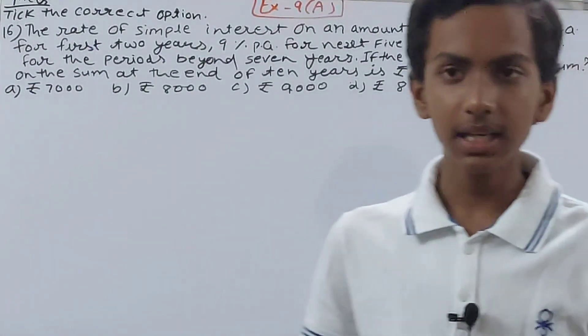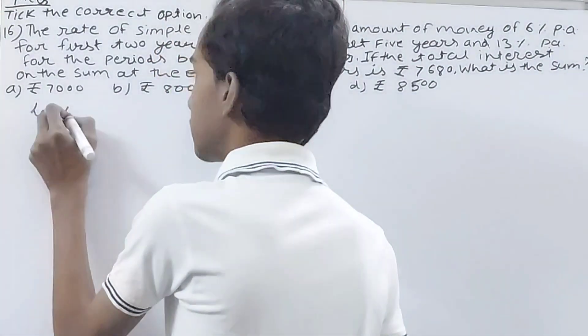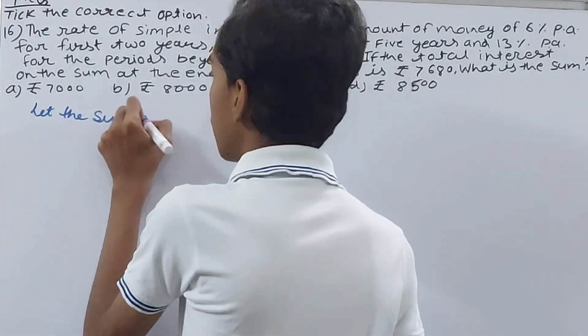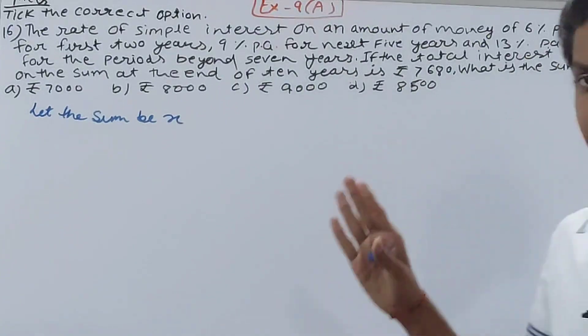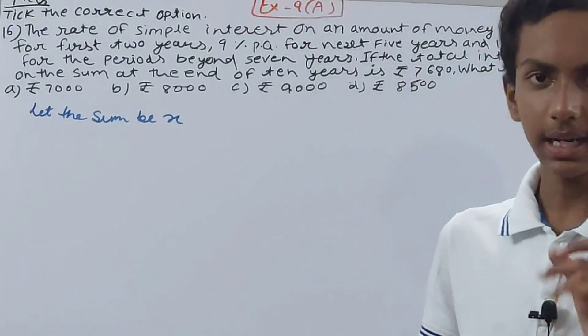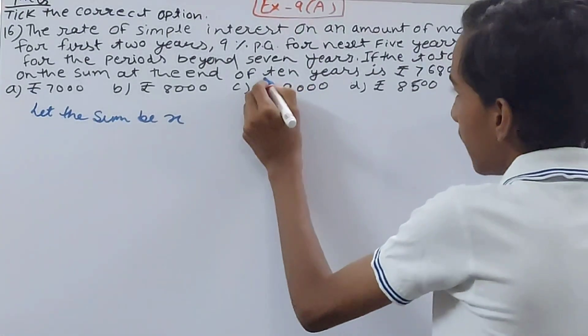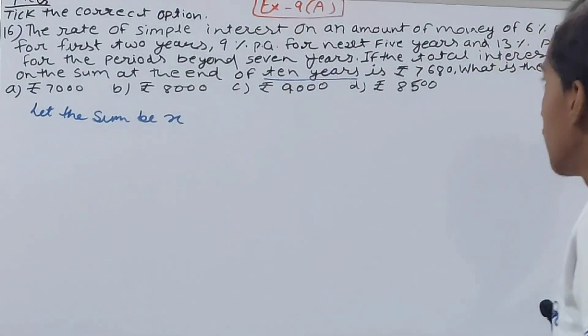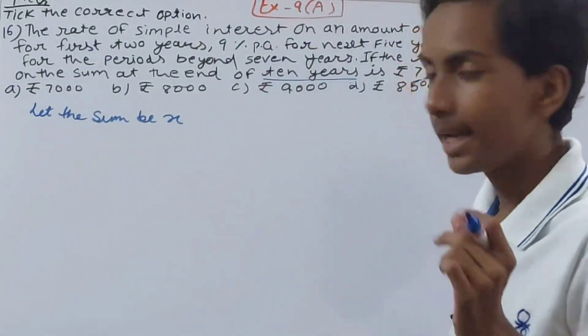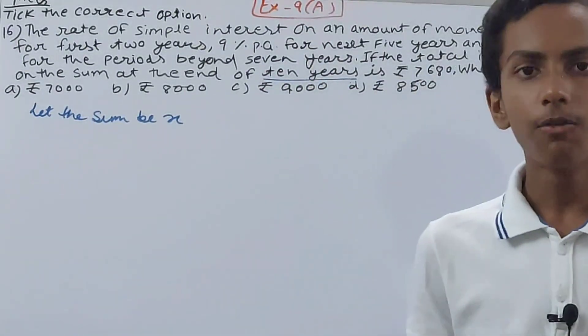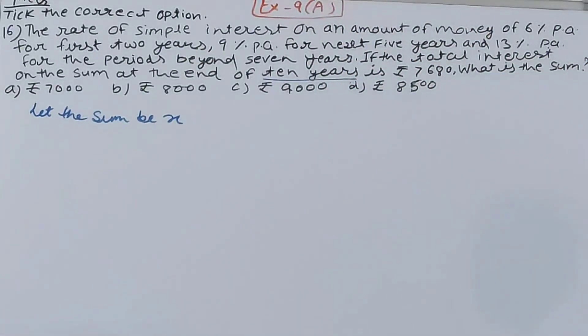If the total interest on the sum at the end of 10 years is rupees 7680, what is the sum? So basically, there is a sum we don't know. Let the sum be x. Now see, the time period, the total time for this sum that it will be on simple interest will be 10 years. At the end of 10 years, the interest is 7680. So that means a total of 10 years. The rate here is not the same for all 10 years.